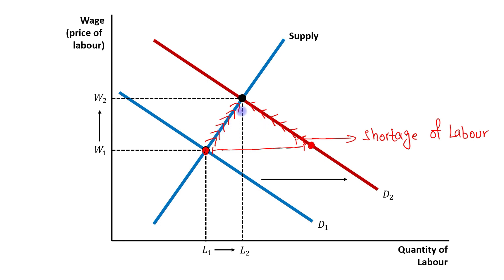These changes will continue until we reach the new equilibrium point. Once this new equilibrium is achieved, the situation of shortage of labor will be finished, and once again the demand for labor will be equal to the supply of labor. At this new equilibrium, both the wage rate and the VMPL are higher compared to the initial equilibrium.